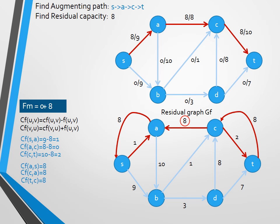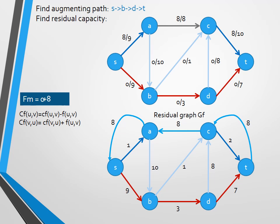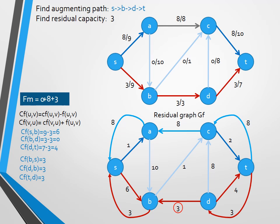And we go looking for another augmenting path. For example, S-B-D-T. Again, we look in the residual graph for the residual capacity, which is 3, add it to the maximum flow, and update the flows in the flow network. And then, we do the same as we did before, we add the back edges to every edge in the path, only this time with capacity 3. S-B, B-D, D-T.